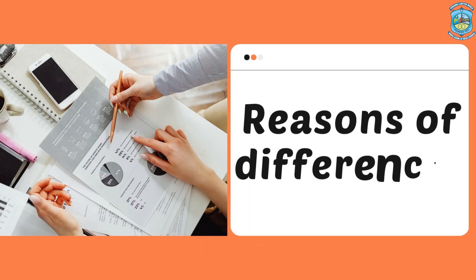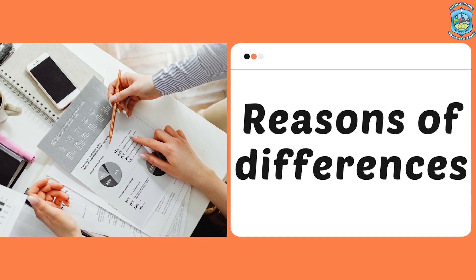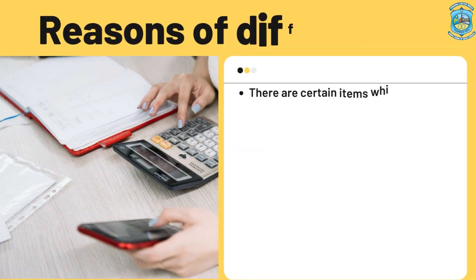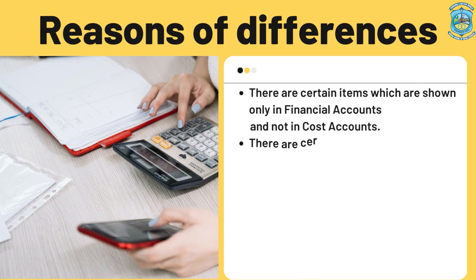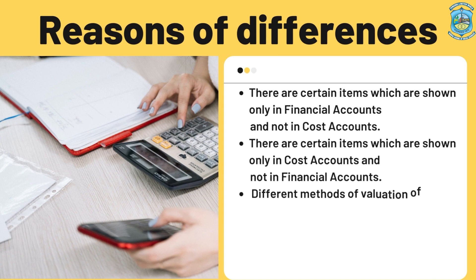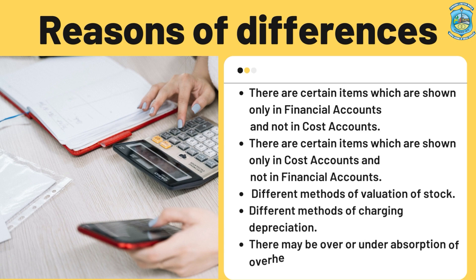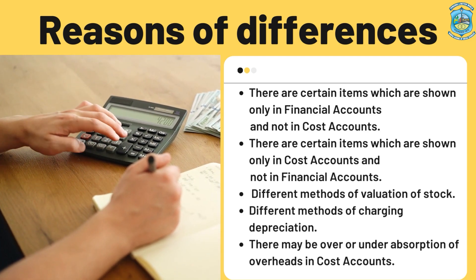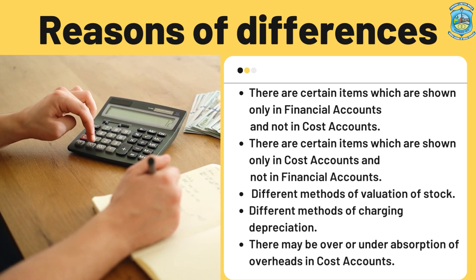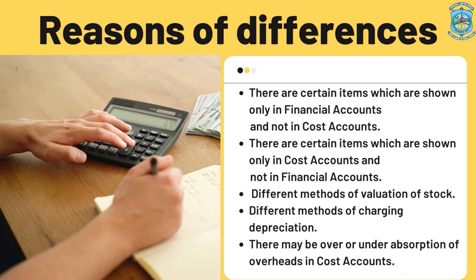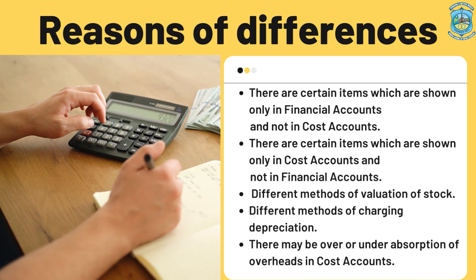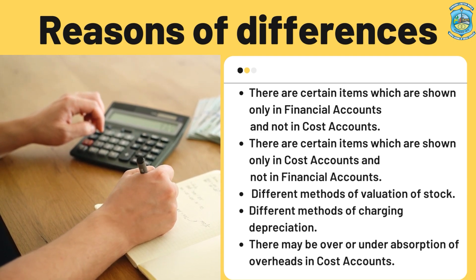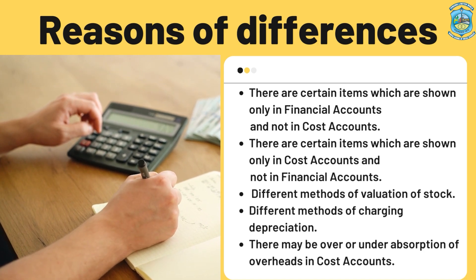Reasons for the differences — what are the various reasons for the difference in the profit balances? Number one: there are certain items which appear only in financial accounting, not in cost accounting. Some expenses are purely related to the financial book and are not shown in the cost account book. Second: there are certain items shown only in cost accounting, not in the financial book.